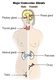Diseases of the endocrine system are common, including conditions such as diabetes mellitus, thyroid disease, and obesity. Endocrine disease is characterized by misregulated hormone release such as a productive pituitary adenoma, inappropriate response to signaling such as hypothyroidism, lack of a gland as in diabetes mellitus type 1, diminished erythropoiesis in chronic renal failure, or structural enlargement in a critical site such as the thyroid in toxic multinodular goiter.